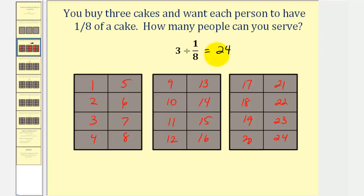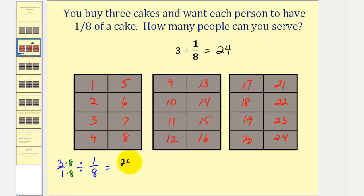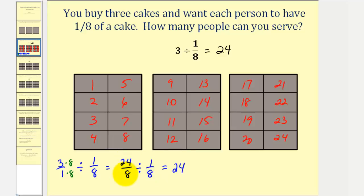Procedurally, we can determine this quotient two ways. One way is to write three as a fraction — three over one — divided by one-eighth, and then obtain a common denominator. The common denominator would be eight, so we multiply by eight over eight. If our denominators are the same, the pieces are the same size, so the quotient is just the quotient of the numerators: twenty-four divided by one equals 24. There are 24 one-eighths in 24 eighths.